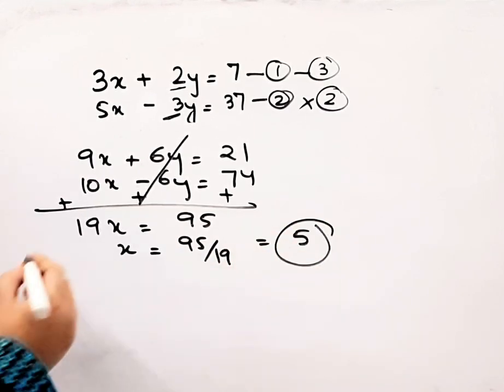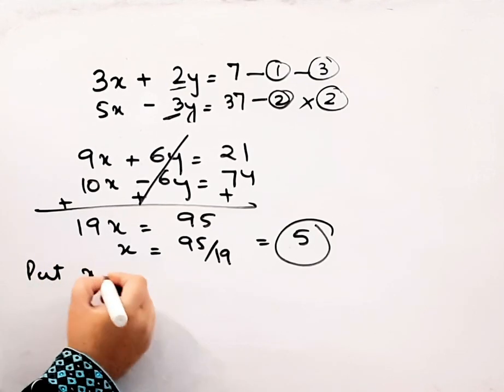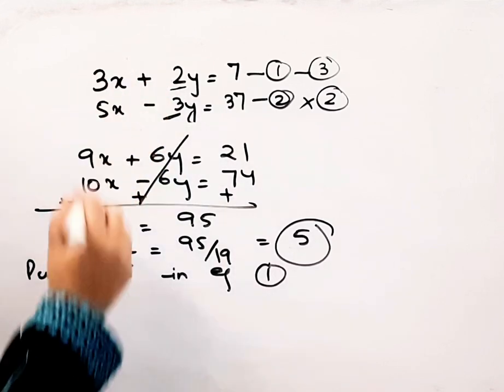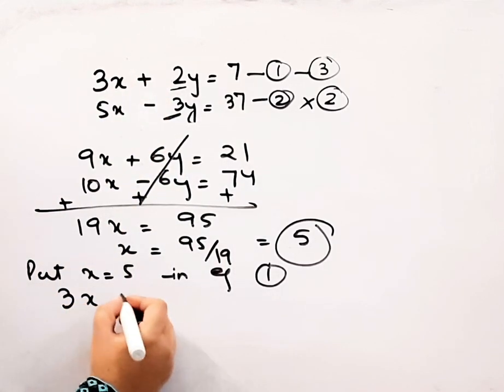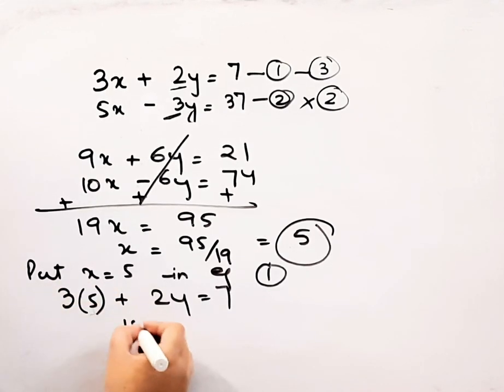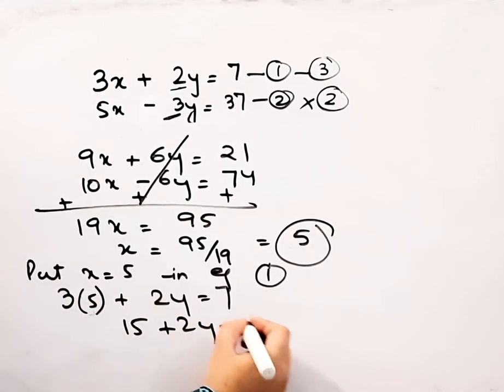Now we will put x equals 5 in equation 1. This equation: 3x plus 2y equals 7. I will put x equals 5 in this. So this will be 15 plus 2y equals 7.